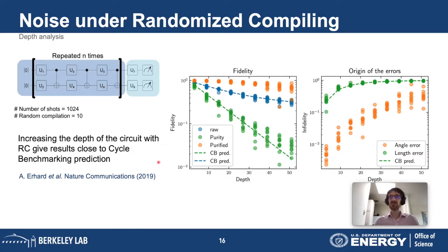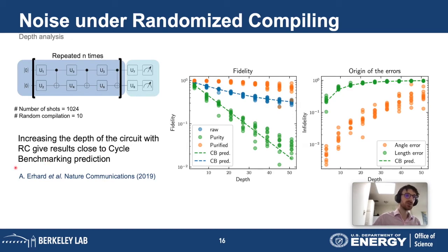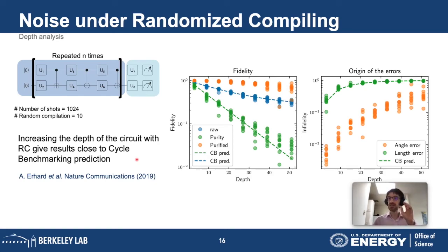I mentioned earlier that randomized benchmarking is not super predictive. But with randomized compiling and a variant called cycle benchmarking, we start to have very good predictions of what an algorithm will do. The dashed curves here are not fits — they are models predicted with cycle benchmarking. Under randomized compiling, quantum processors behave much more predictably because you average out coherent errors, making it easier to estimate performance without coherent error accumulation.